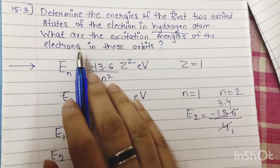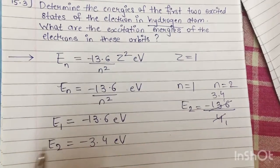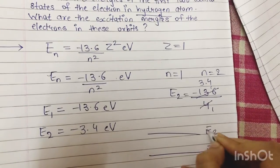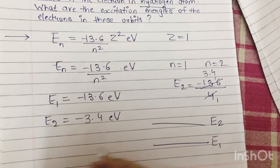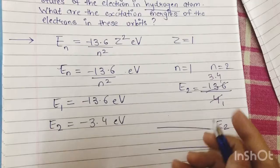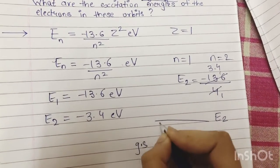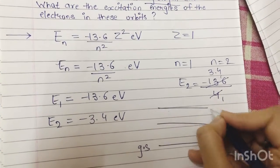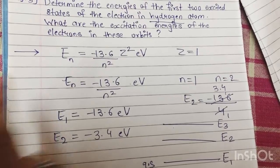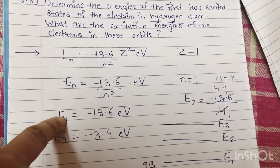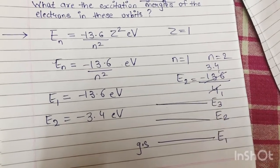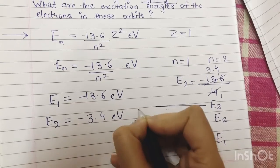Now what are the excitation energies of the electron in this orbit? First you should understand what excitation energy is. Excitation energy is the energy required to take an electron from the ground state to an excited state. My students get confused — they write N=1 as the first excited state. No. N=1 is your ground state. N=2 is your first excited state. N=3 is your second excited state.